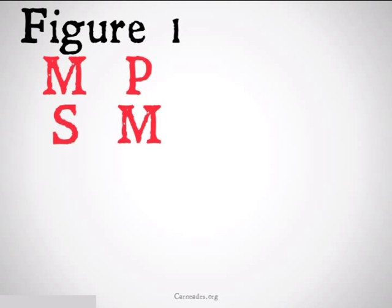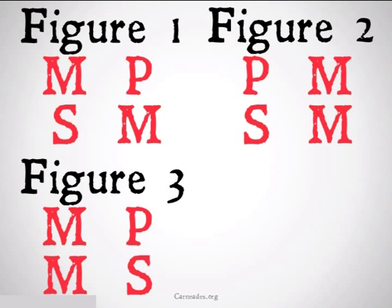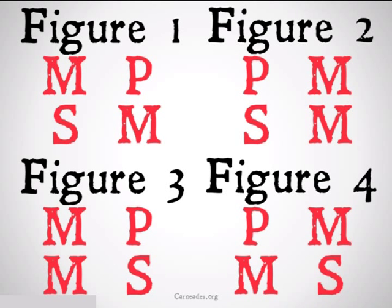We've learned that figure 1 has a diagonal going down from the top left to the bottom right. Figure 2 has a column of middle terms on the far right. Figure 3 has a column of middle terms on the far left. Figure 4 is going to have a diagonal of middle terms going the opposite way from figure 1 — from the bottom left to the top right. That just means the middle term is going to be second in the first premise and first in the second premise.